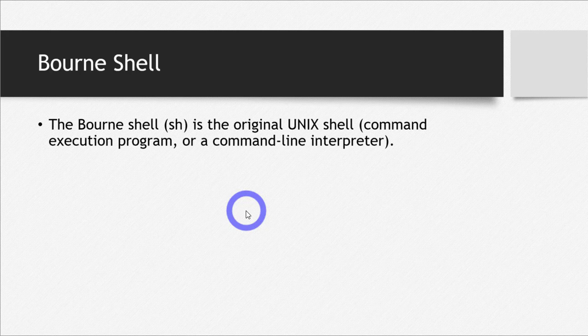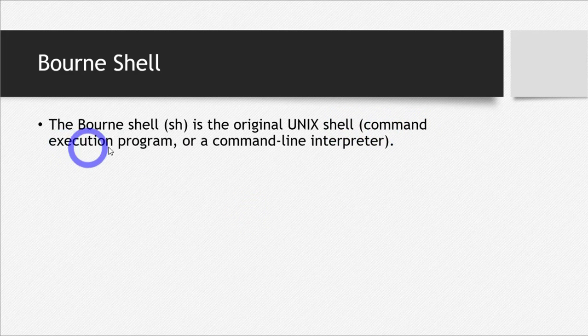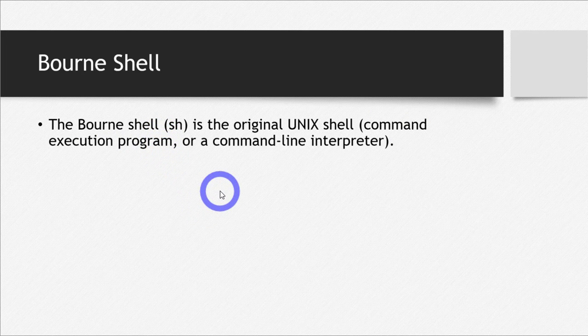First of all, what is a shell? Shell is a command line interpreter for a computer operating system. Shell is nothing else but a command execution program — we write some command, the shell reads it, processes it, and interprets it, and then gives us the output of that command.